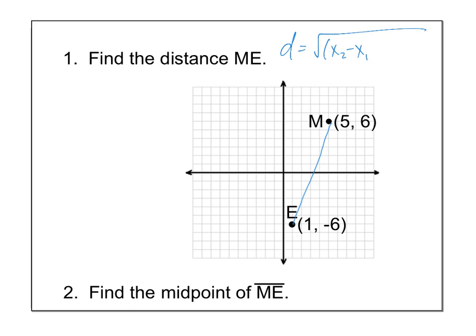x2 minus x1 squared plus y2 minus y1 squared. D stands for distance. And so it doesn't really matter which points you call the ones and which points you call the two, but once you label them, stick with them. So like for instance, I could call this my first x and my first y and this can be my second x and my second y. And now it's just a matter of plugging them into the formula.